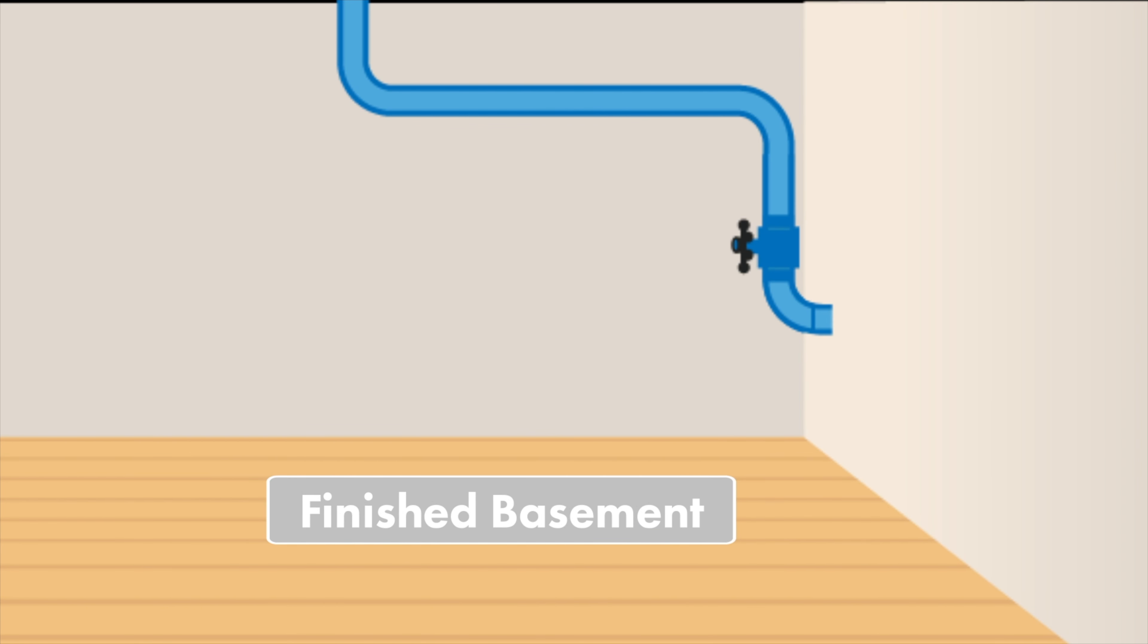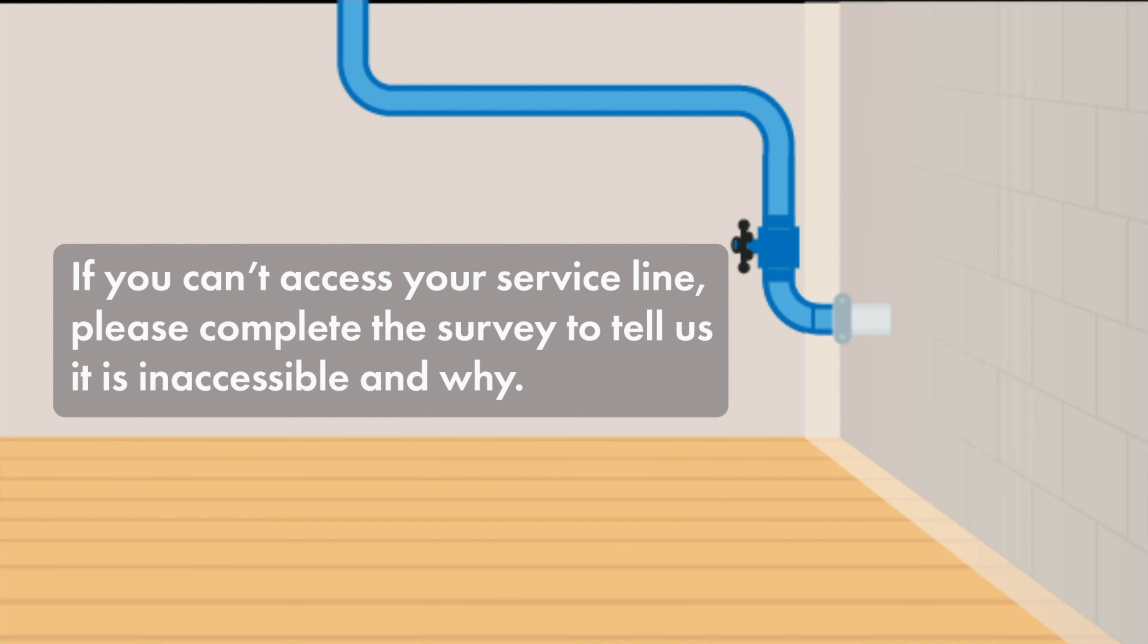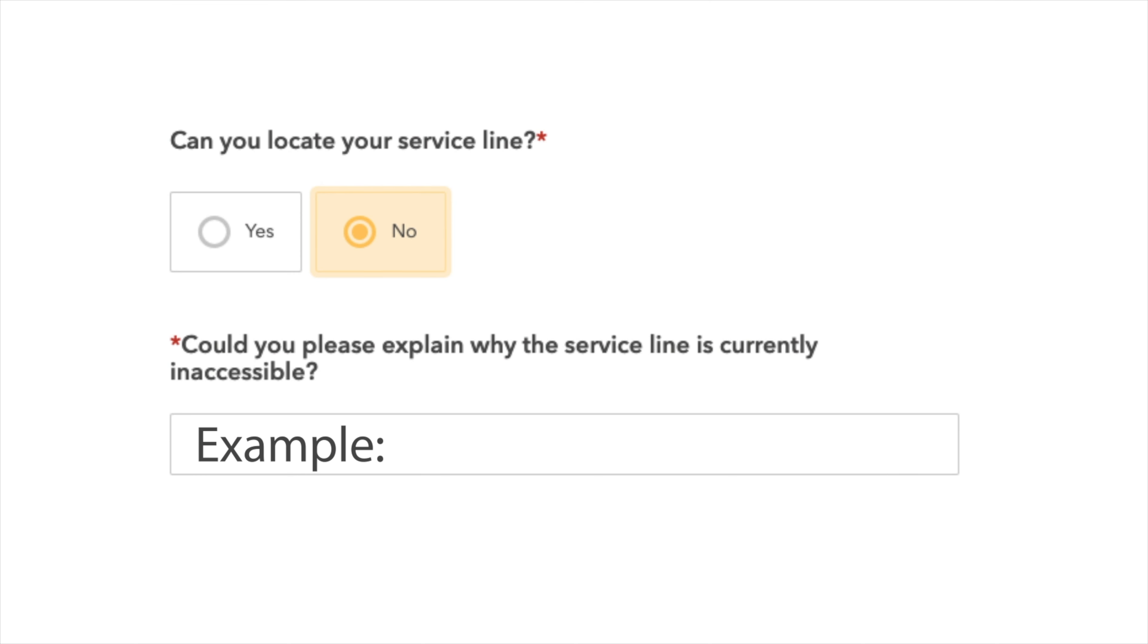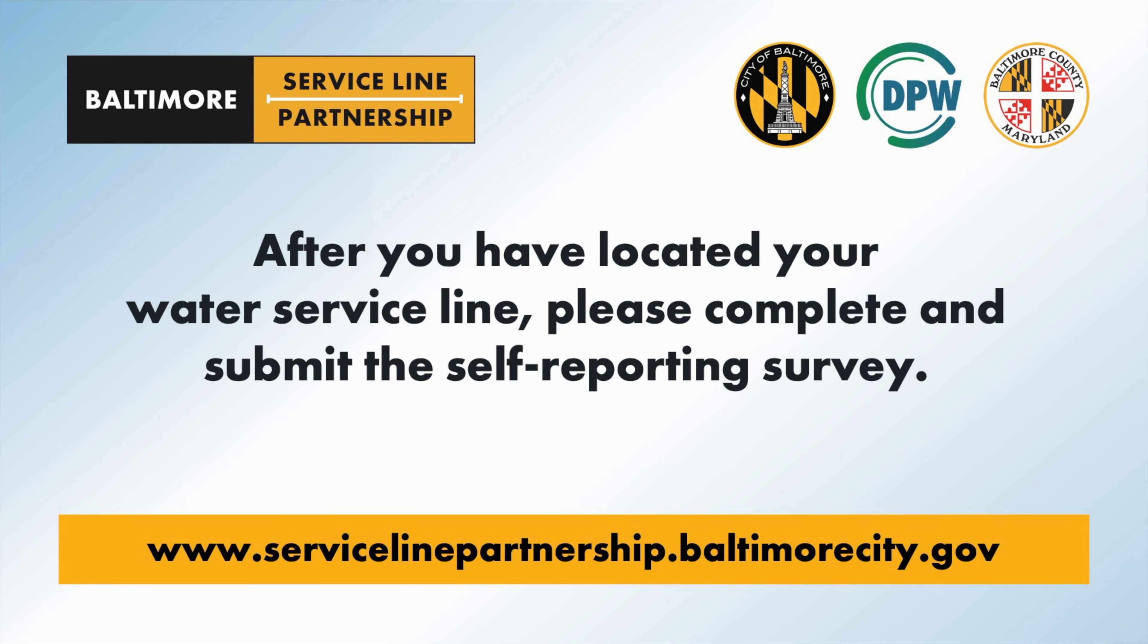If you cannot locate or reach your service line because your basement is finished and the pipe is not visible at the entry point, it is visible but cannot be reached, or it is inaccessible, note the reason you were unable to complete the scratch and magnet test on the self-reporting survey.